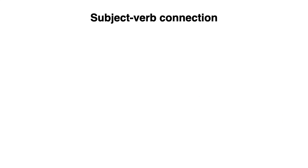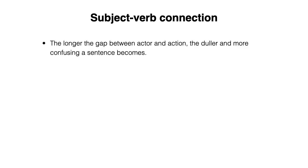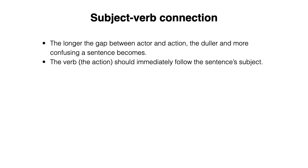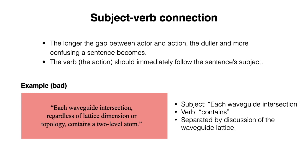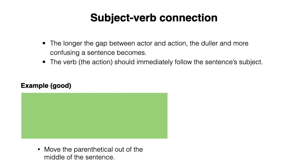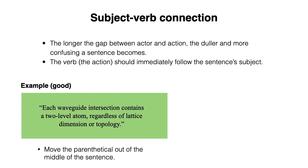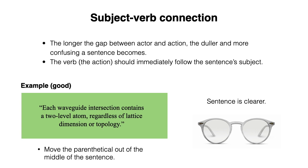Now, it's also very important to pay attention to the subject-verb connection. The longer the gap between actor and action, the duller and more confusing a sentence becomes. The verb, which is the action, should immediately follow the sentence's subject. Let's start off with a bad example: "Each waveguide intersection, regardless of lattice dimension or topology, contains a two-level atom." Here, the subject is "each waveguide intersection," while the verb is "contains," but these two are separated by a discussion of the waveguide lattice. We can fix this by moving the parenthetical out of the middle of the sentence: "Each waveguide intersection contains a two-level atom, regardless of lattice dimension or topology." I hope you agree that this sentence is much clearer.